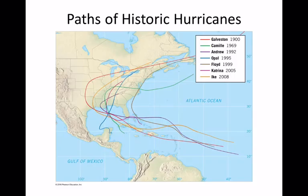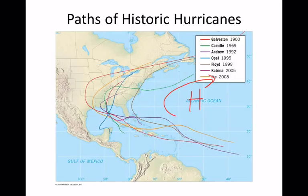Looking at historic hurricane paths, you can see a pattern called recurving. We've talked about semi-permanent highs between the Hadley and Ferrel cells. Around a high, anticyclonic movement in the northern hemisphere is clockwise, and that's the driving force behind recurving. Some recognizable names in those historic paths include the Galveston, Texas hurricane.